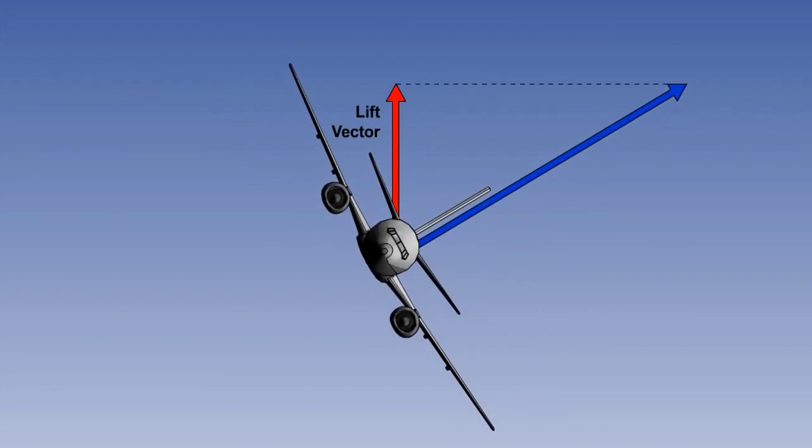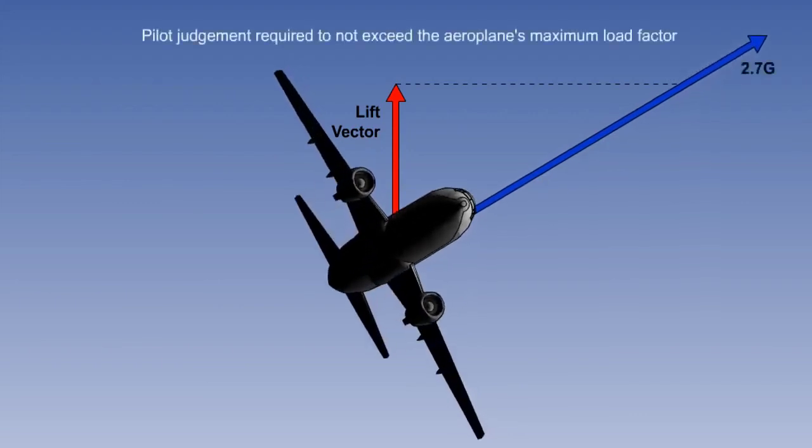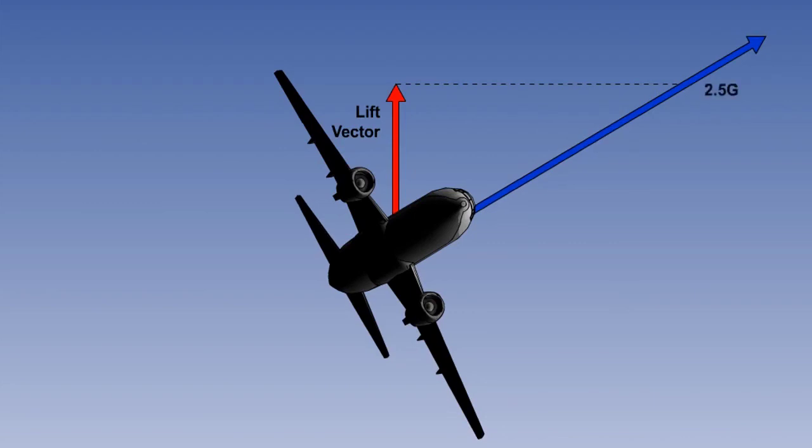In conventional airplanes, remaining within the airplane's load factor requires pilot judgment and feel. In an emergency, this could lead to the maximum load being exceeded and damage to the airplane. In a fly-by-wire airplane, the flight control computers know the instantaneous G load, which is supplied by accelerometers, and will reduce the elevator input to remain within the airplane's load factor limit.